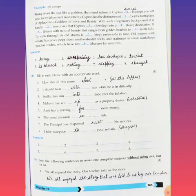Now come to part C. Join the following sentences to make one complete without using 'and', 'but', or 'so'. First one is: We all enjoyed the story. Our teacher told us the story. What is the answer? We all enjoyed the story that was told to us by our teacher.